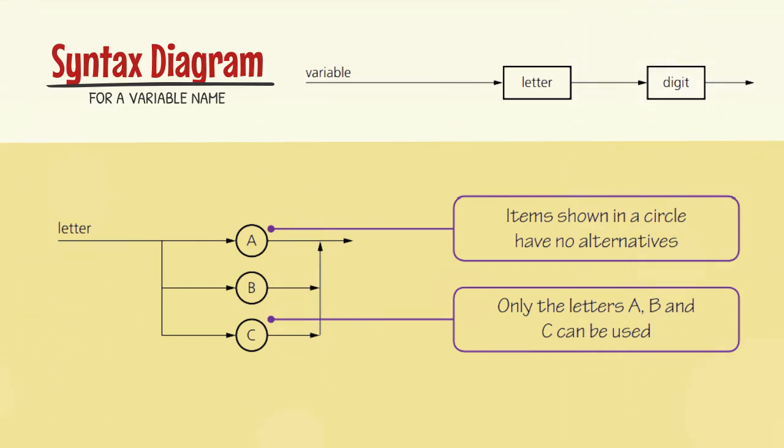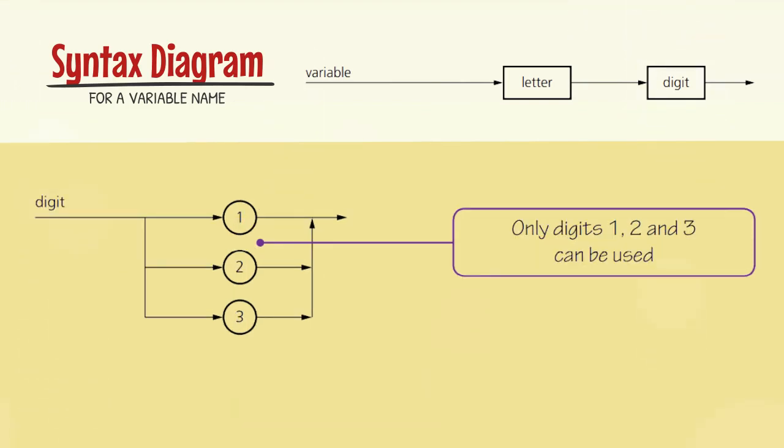It is notable that how alternatives have been defined. Similarly, for digit, another syntax diagram given which defines that in this language, digit means 1, 2, or 3 only.